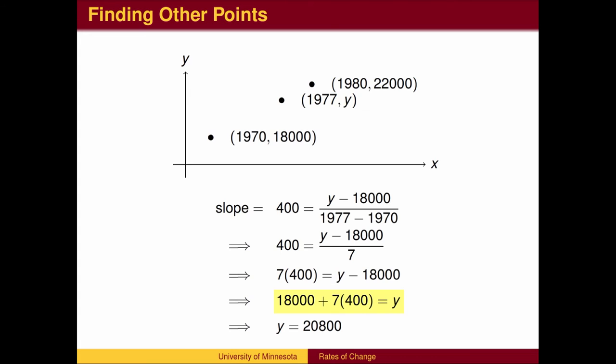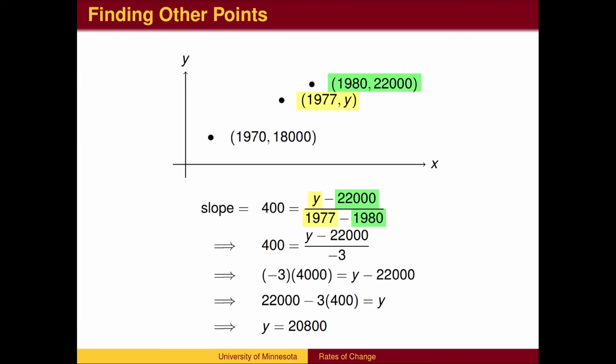The original population of 18,000 in 1970 should have grown by 400 people per year for 7 years, giving a 1977 population of 20,800. We could also compare the 1977 population to the 1980 population to get the same answer.